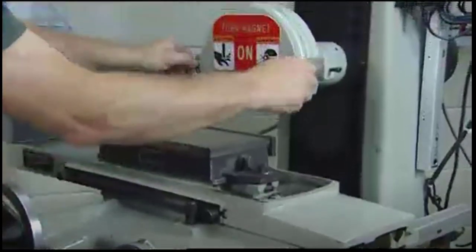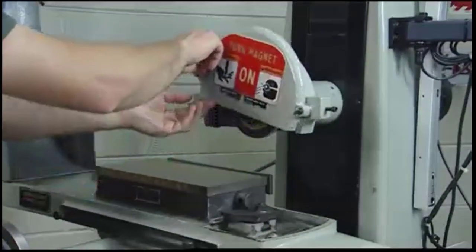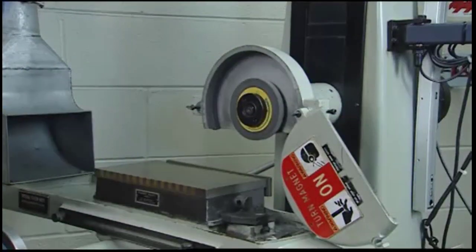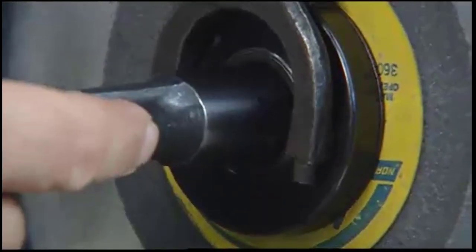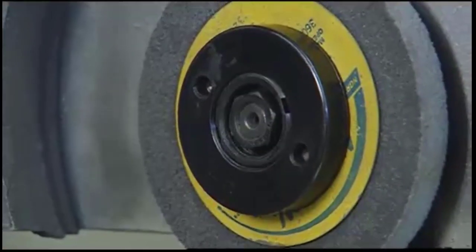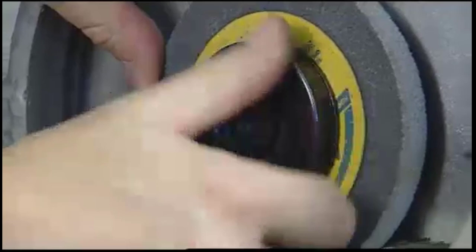The first step in changing a grinding wheel on the surface grinder is disconnecting the electrical power, then opening the wheel guard. Using suitable wrenches, loosen the spindle nut. This thread is left-handed, so you'll loosen it by turning the nut clockwise.